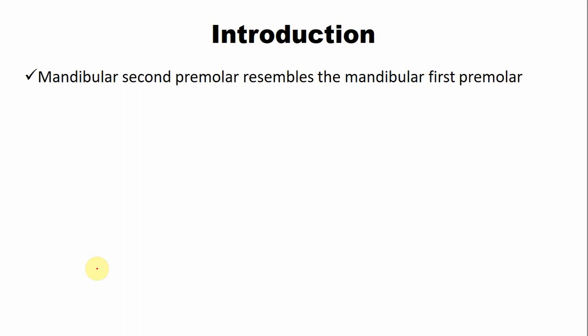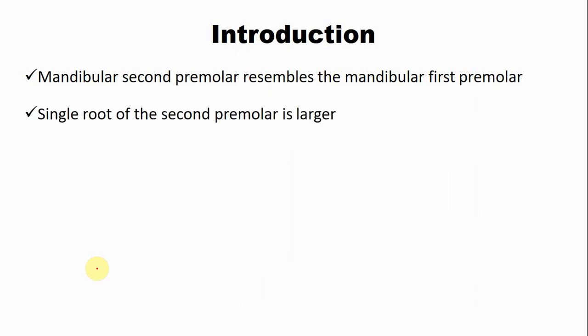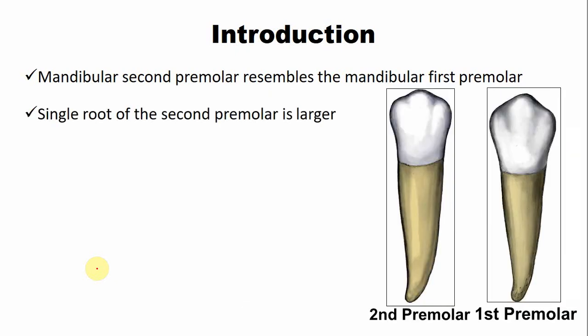The general features of the mandibular second premolar: in general, it resembles the mandibular first premolar, as you can see in the picture. However, the mandibular second premolar is slightly larger compared to the first premolar. The root is also single-rooted, but slightly larger both mesiodistally and in length as well.